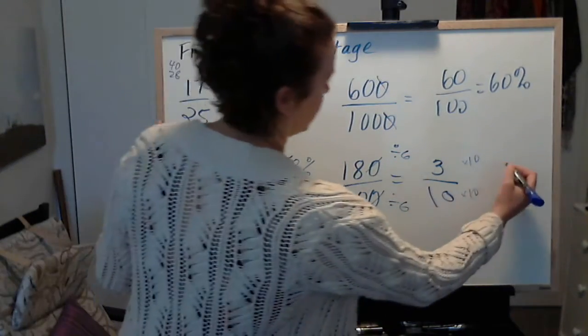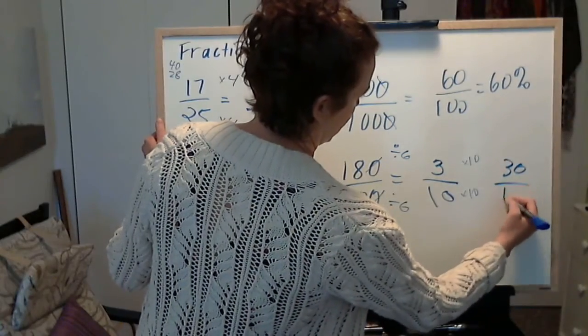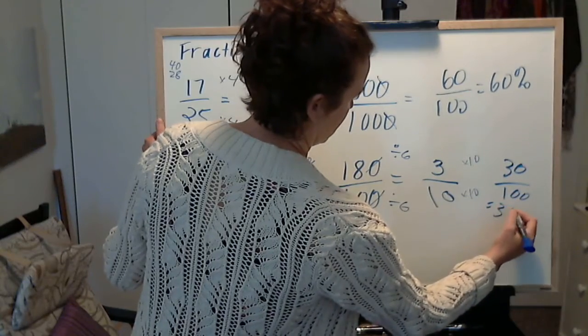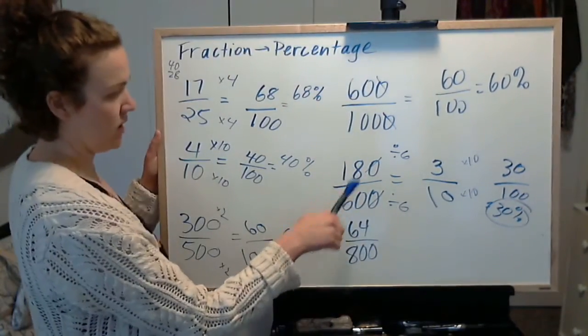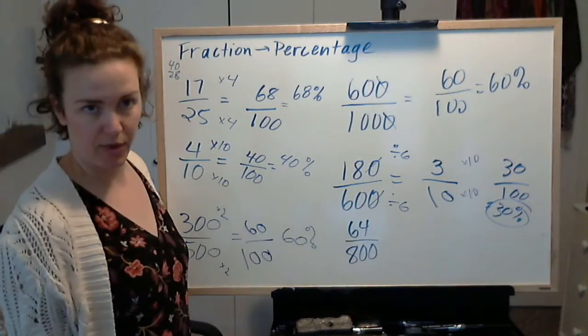So 3 times 10 is 30. 10 times 10 is 100. So 180 out of 600 is equal to 30%.